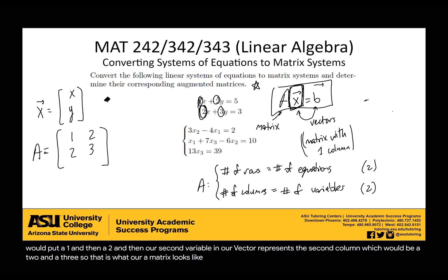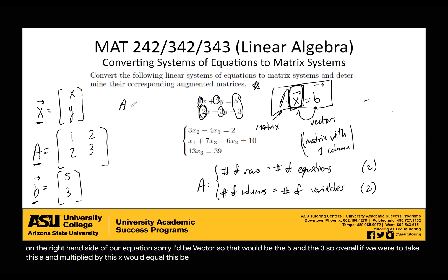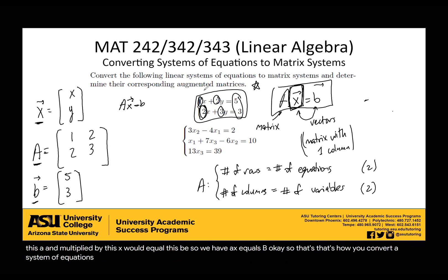And then to get our B vector, it's just the coefficients that are on the right hand side of our equation. So that would be the five and then the three. So overall, if we were to take this A and multiply by this x, it would equal this B. So we have Ax = B. That's how you convert a system of equations into a matrix equation.